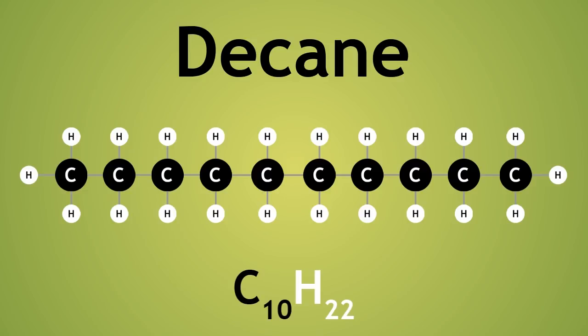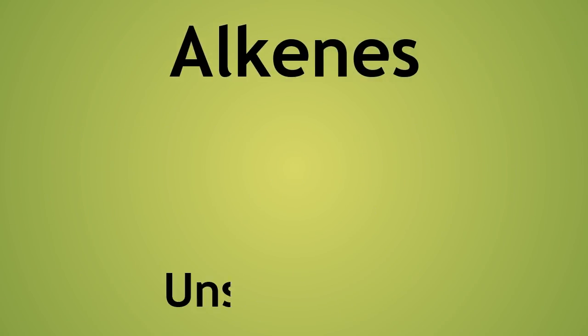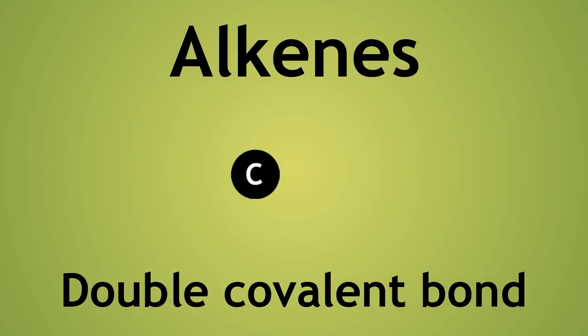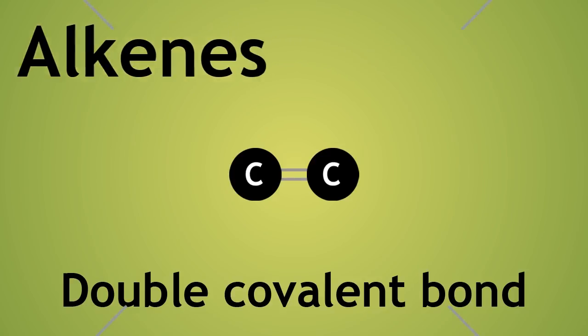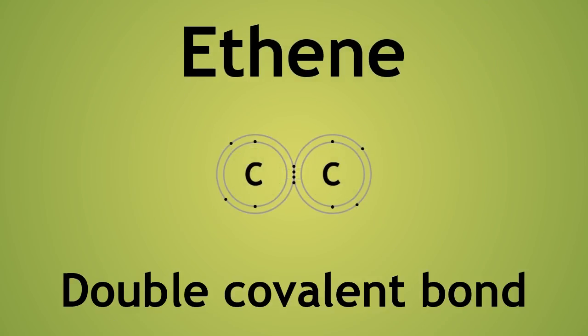Let us look now at the homologous series of the alkenes. These are unsaturated, and so contain a double covalent bond between 2 carbon atoms. Here is ethene. Since there is a double bond, there are now 2 shared pairs of electrons between the 2 carbon atoms. Each carbon atom now has only 2 electrons, which covalently bond with a total of 4 hydrogen atoms, 2 on each carbon, to complete the ethene molecule.